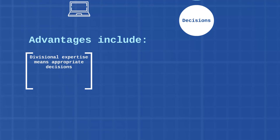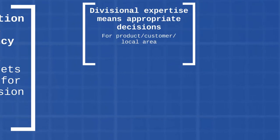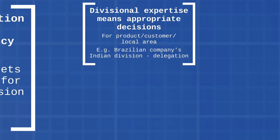The first advantage of decentralization is that decision making is passed down to the divisions, and divisional managers can use their expertise to make appropriate decisions to suit the product, the customer, or the local area. For example, imagine a large Brazilian multinational with a decentralized Indian division. The manager of the Indian division is going to be making choices for that division and is probably in a better position to judge what their customers need than a Brazilian-based corporate office.